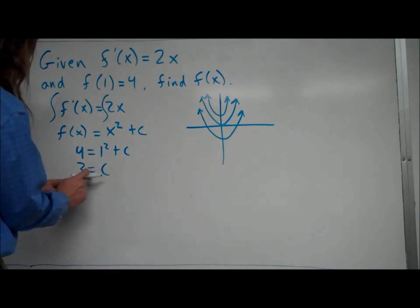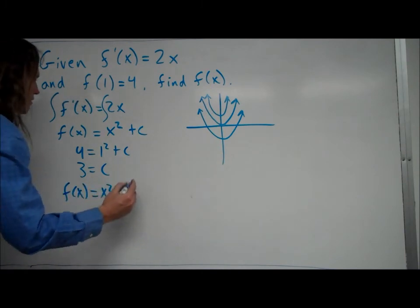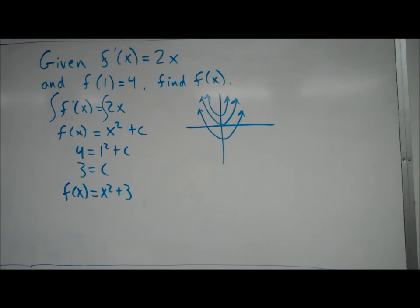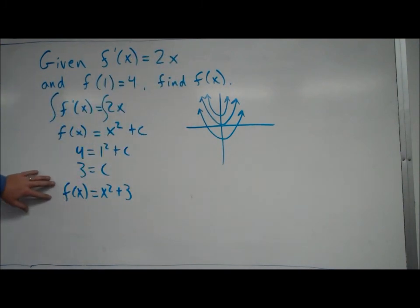So now I can just go ahead and plug 3 back in for c, and I have what f of x is. So this right here would be called the particular solution to a differential equation. This would be the general solution to the differential equation, since it could represent one of many different graphs. This one is one specific graph, so this would be the particular solution. There you go.